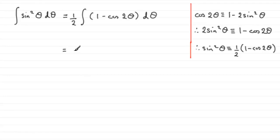So in the usual way then, we've got 1 half. We can integrate these terms here. We should be familiar with this. So the integral of 1 with respect to theta is going to be theta, and the integral of minus cos 2 theta is going to be minus 1 half sine 2 theta. And then don't forget the constant of integration plus c.